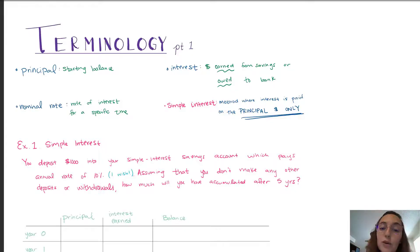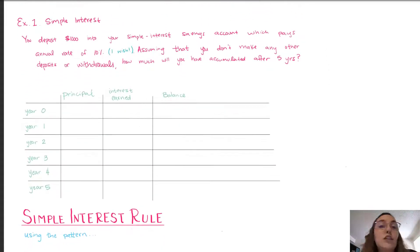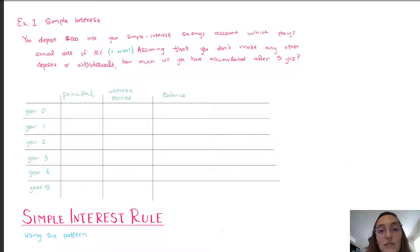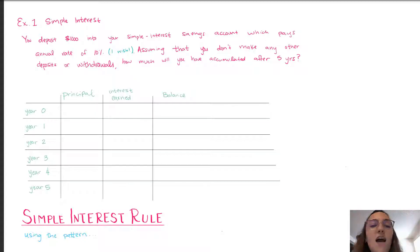Now the method that we're going to look at first is simple interest. In this method, interest is paid only on the principal amount, not on anything else. Let's go through an example. You deposit a thousand dollars into your simple interest savings account which pays an annual rate of 10% — very unrealistic, I wish they paid 10% but it gives us nice numbers. Assuming that you don't make any other deposits or withdrawals, how much will you accumulate after five years?